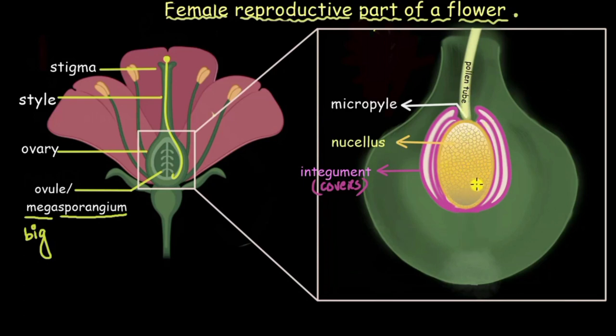Now the area in the nucellus which is extreme opposite of the micropyle is given a specific name called chalaza. So chalaza is nothing but the bang opposite end of micropyle.